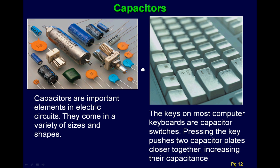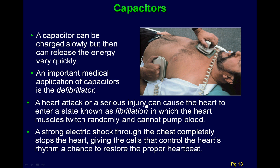Here are some real-life capacitor examples. In most keyboard keys, the keyboard is actually a capacitor — when you press it, you move two pieces of metal closer, the capacitance increases, and the keyboard registers the key press. Another example: the defibrillator paddles you see in medical dramas. You can hear them charging up — that's the capacitor charging. Then it discharges across someone's heart to help with a heart attack.